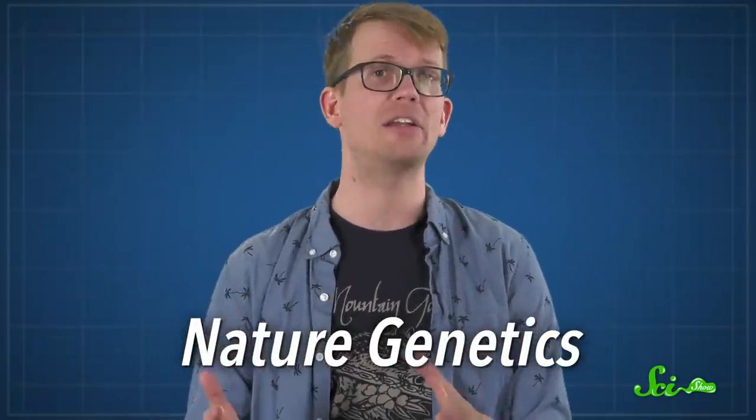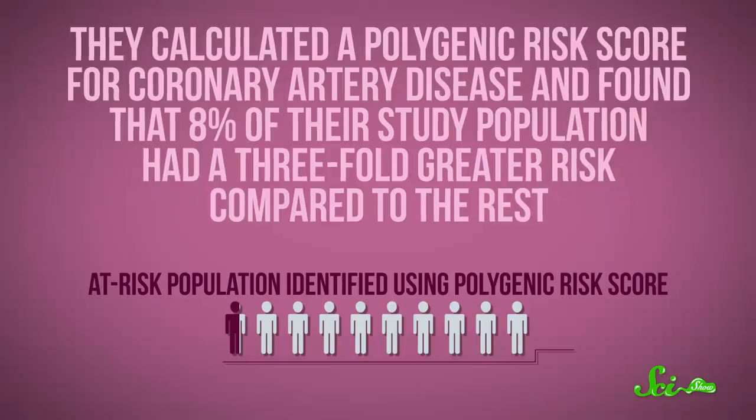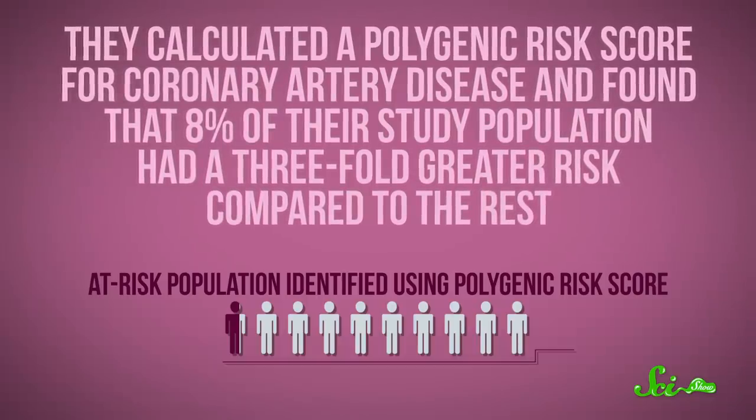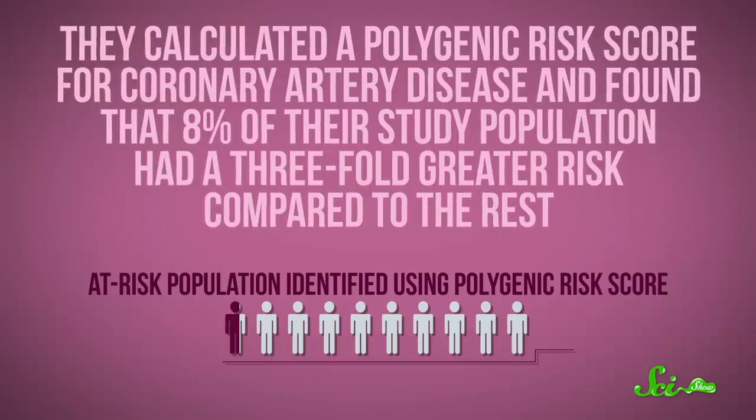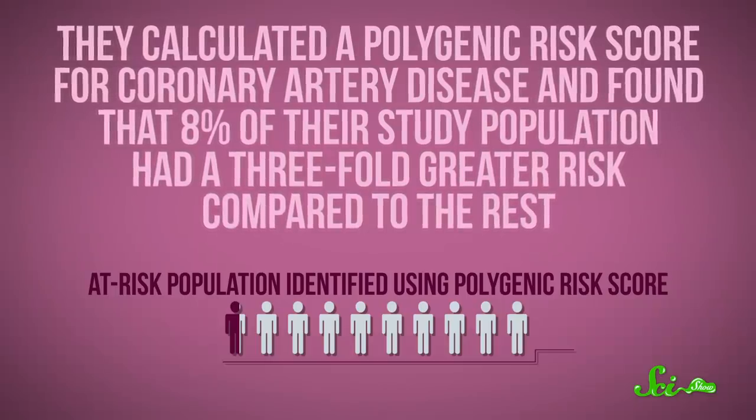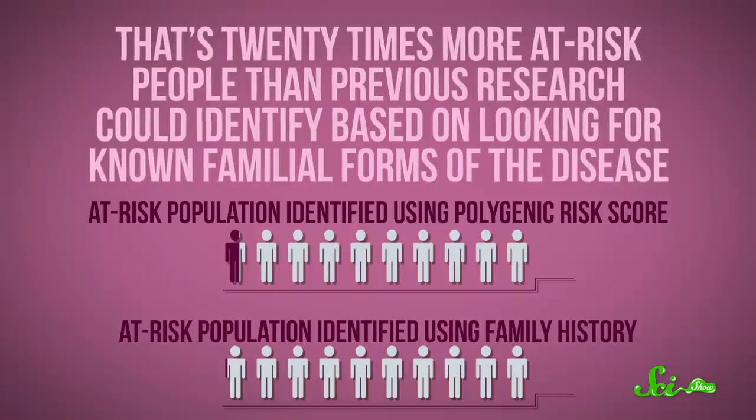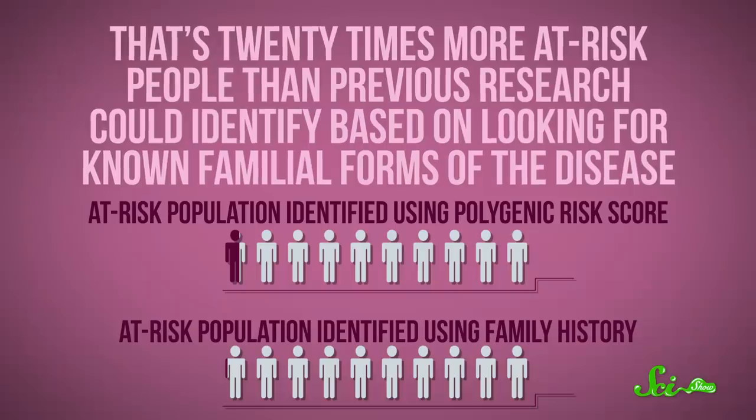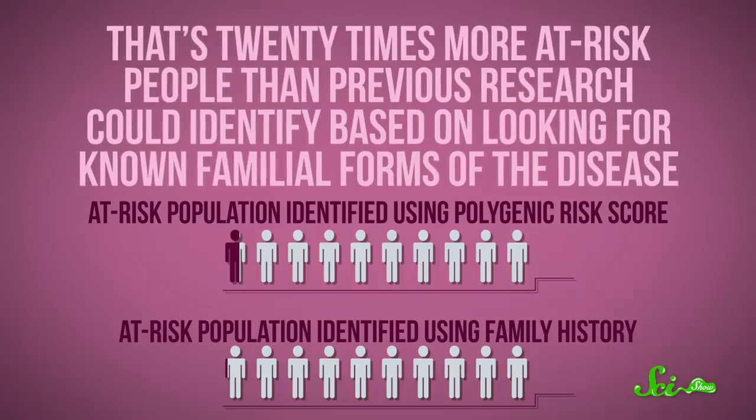Consider a study published in 2018 in the journal Nature Genetics, for example. They calculated a polygenic risk score for coronary artery disease and found that 8% of their study population had a three-fold greater risk compared to the rest. That's 20 times more at-risk people that previous research could identify based on looking for known familial forms of the disease.